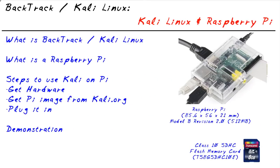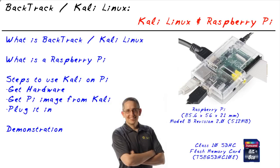In this micronugget, we learned that Backtrack and Kali Linux are Linux distributions containing hundreds of penetration testing and hacking tools. We learned that a Raspberry Pi is a very small, affordable computer, and that we can run Kali Linux on it. We also took a peek at running an application like Wireshark on Kali Linux running on a Raspberry Pi. I've had a lot of fun — I'm glad you joined me, and I hope this has been informative. Thank you for viewing.